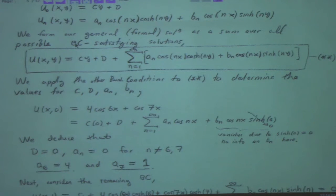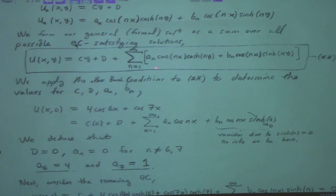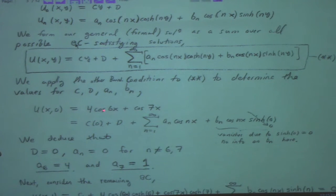Finally, the blank template gives the general solution. I apply the boundary conditions. U of x, 0 is supposed to be 4 cosine 6x plus cosine 7x. When I plug in y equal to 0, the sinh piece goes away and I'm left with the sum of a sub N cosine nx plus a constant d. Looking at this being equal to 4 cosine 6x plus cosine 7x, d is 0, and only a sub 6 and a sub 7 are non-zero — a sub 6 is 4 and a sub 7 is 1.